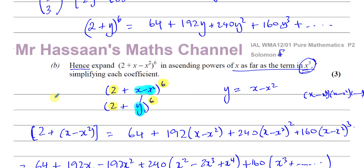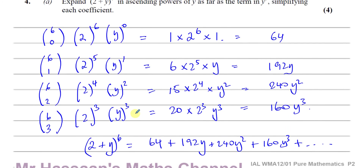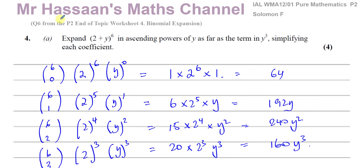That's the answer to part B of question 4 from the Solomon F paper, and question 6 from my end-of-topic worksheet on binomial expansion from P2. Thank you for watching. Other questions from the Solomon F paper, as I compile them, will be in the playlist. You'll also find a playlist for binomial expansion questions in general, and a playlist for my end-of-topic worksheet. Subscribe to my channel, and at the top of the page you can find a P2 paper you might be interested in watching. See you soon.